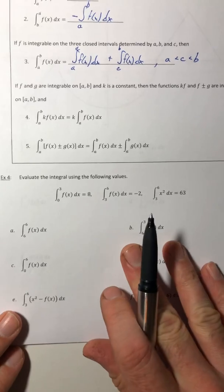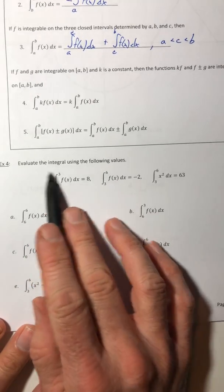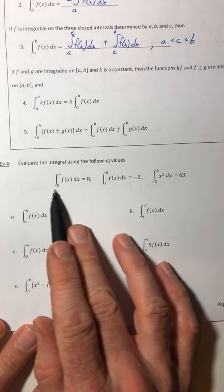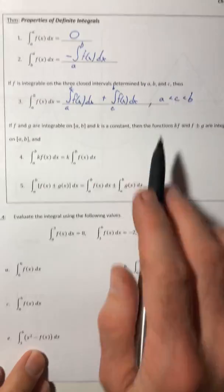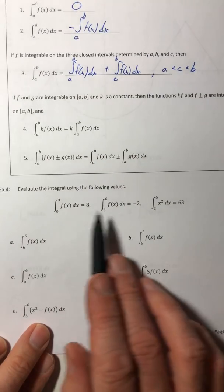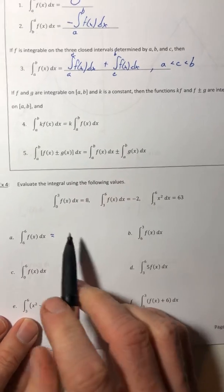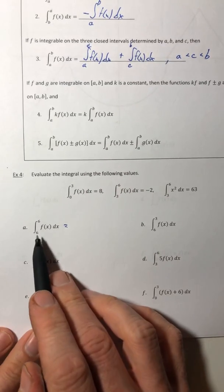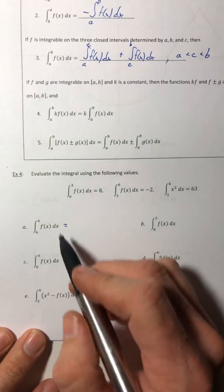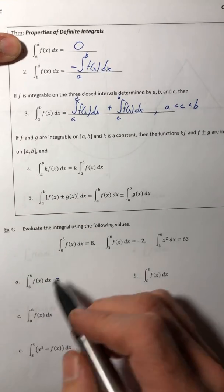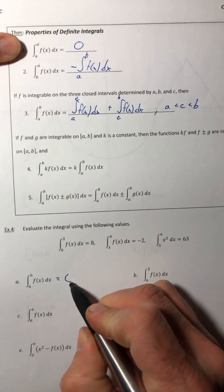Okay, so let's look at this. We're just going to evaluate them based off of these properties up here. We've defined these three integrals, we just have to use it. So part A, the integral from 6 to 6 of f(x), well that's like property number one, the bounds match, so that's going to give you a zero.